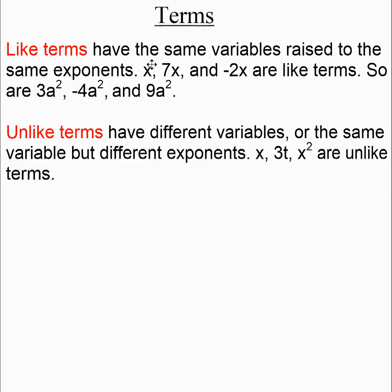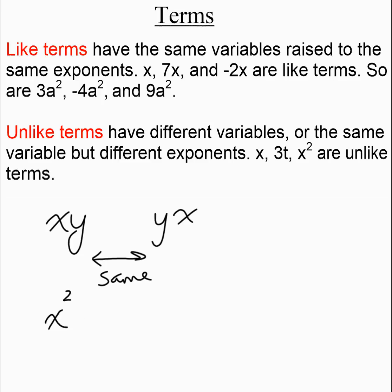So x and x squared have the same variable — they both have an x — but one is x to the 1 and one is x to the 2. Or x and 3t: those are totally different letters, so they are not like terms. Also note: if I write xy and then yx, these are the same. The order isn't important. But x squared y is not the same as y squared x.